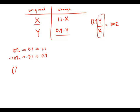Statement number one tells us the increased price per share of stock X was equal to the original price per share of stock Y. So 1.1X equals Y. We divide both sides by X and we get 1.1 equals Y over X. We have the ratio of Y over X, so now we can solve. This statement by itself is sufficient.